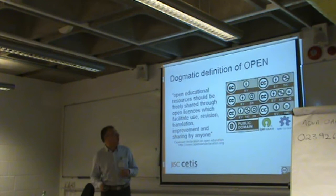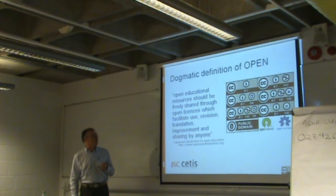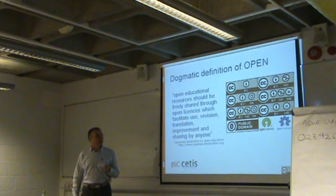The great and the good declared in Cape Town about four years ago that open educational resources should be freely shared through open licenses which facilitate use, revision, translation, improvement and sharing by anyone. And if you're dealing with open access research repositories, then you'll be familiar with at least the top six of these open licenses.